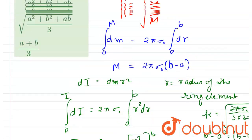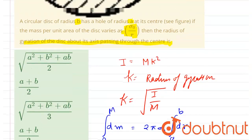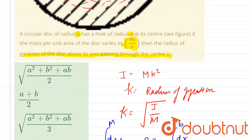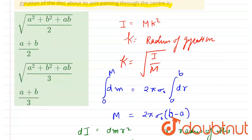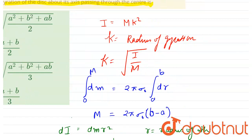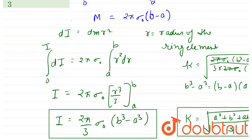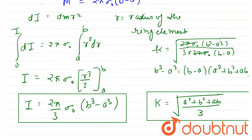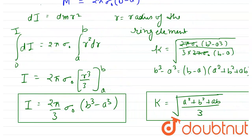Looking at the question again — we wanted to find the radius of gyration, and we found it to be k = √((a² + b² + ab) / 3). Simple.